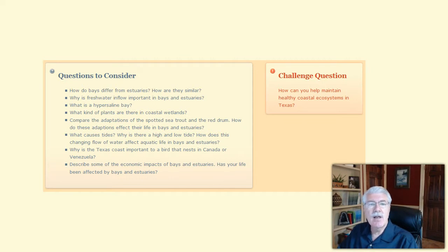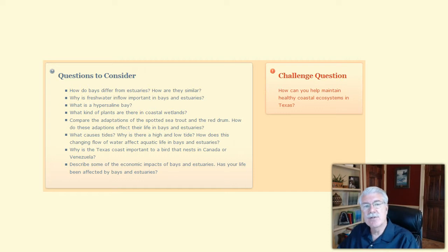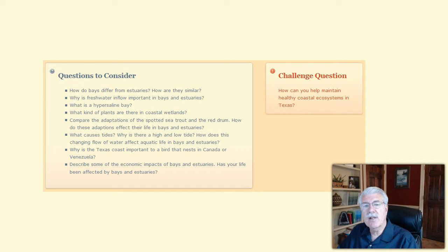What kind of plants are there in coastal wetlands? Compare the adaptations of the spotted sea trout and the red drum. How do these adaptations affect their life in bays and estuaries? What causes tides? Why is there a high and a low tide? And how does the changing flow of water affect aquatic life in bays and estuaries?